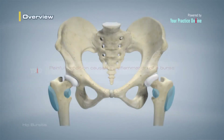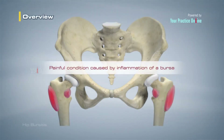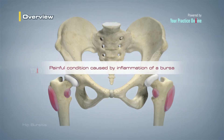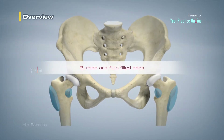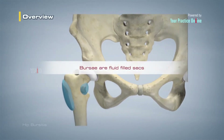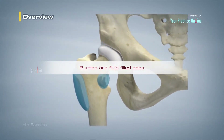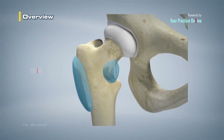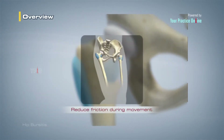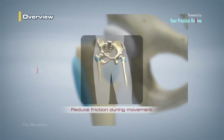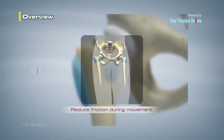Hip bursitis is a painful condition caused by inflammation of a bursa in the hip. Bursae are fluid-filled sacs present in joints between bone and soft tissue to reduce friction and provide cushioning during movement.